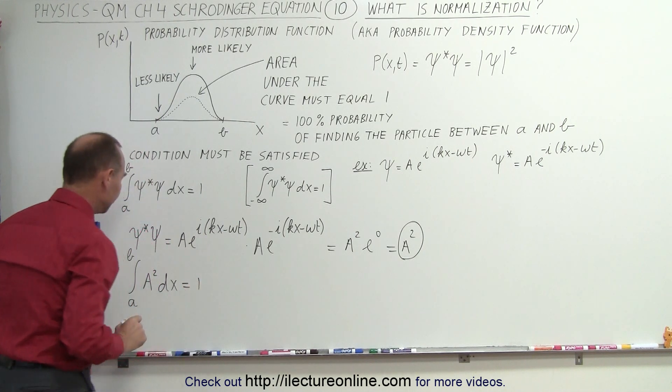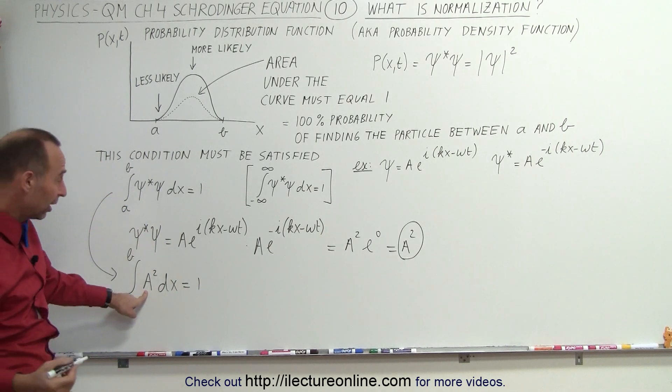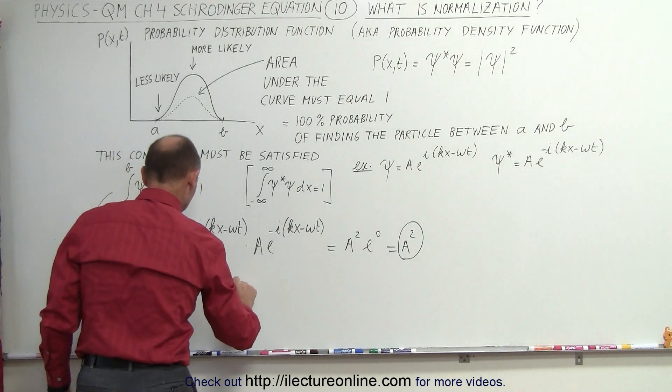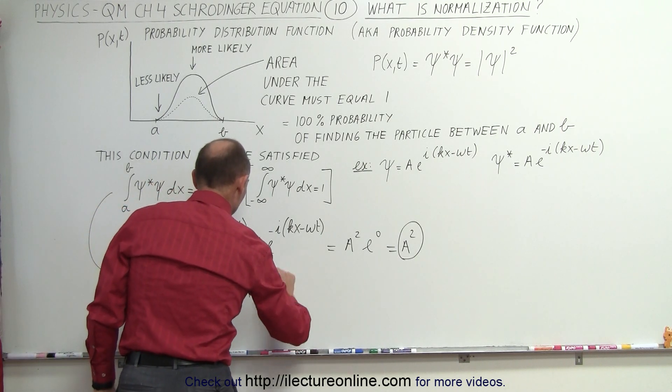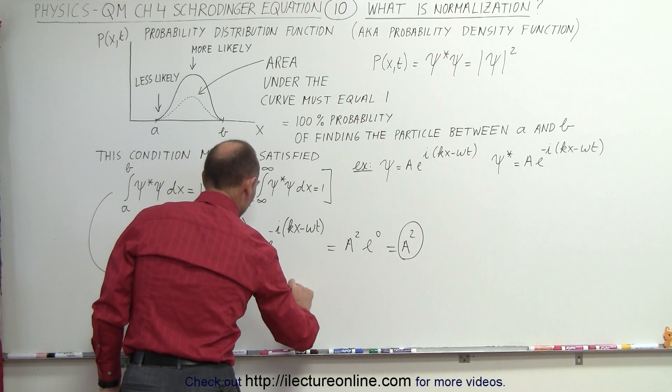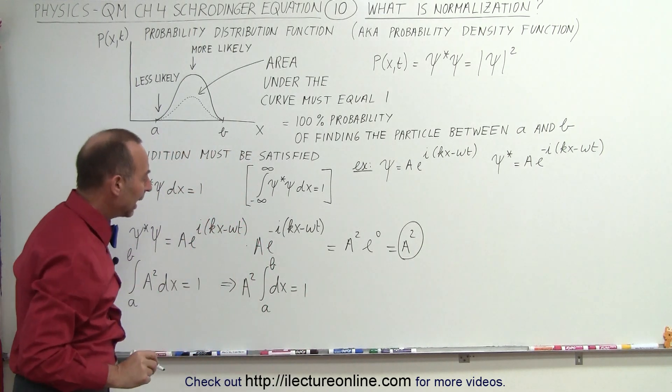Of course, a squared is a constant, we can take that outside the integral sign. So we can say that a squared times the integral from a to b of dx must equal one.